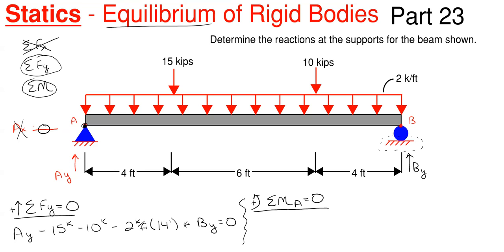A sub y goes directly through point A, so we don't include it — it has no perpendicular distance to create a moment. Starting with our 15 kips: 15 kips times its perpendicular distance to A, which is four feet, so multiply by four feet. The 15 kip force is trying to rotate clockwise about point A, so that's negative based on our sign convention.